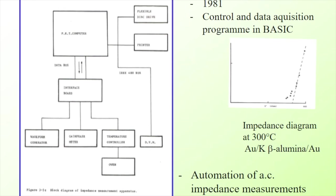Here is a block diagram of the experimental setup. The interface board is linked to the PET computer via a data bus, and then it talks to a waveform generator, a gain phase meter to make the measurements, and a temperature controller to set the temperature of the oven in which our sample was placed. All this was driven with a control and data acquisition program written in BASIC. This gave us a screen output in real time of the impedance diagram, which was very useful to see whether the experiment was working well. Here's an example of an impedance diagram for blocking electrodes of gold on potassium beta alumina.